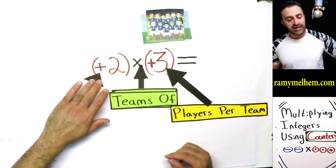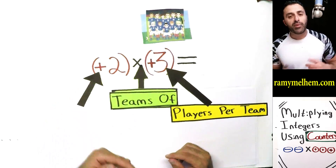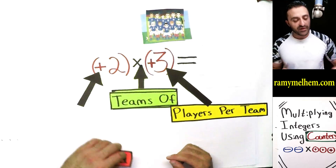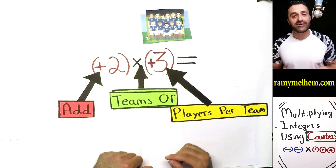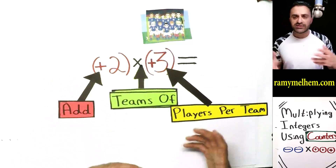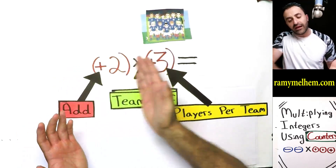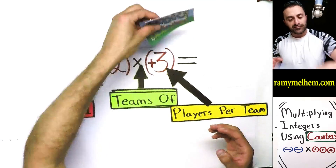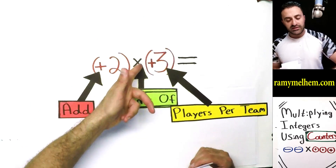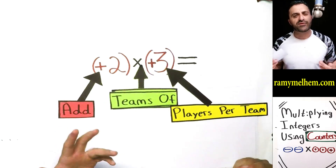That brings us to the positive sign. If that first symbol is a positive, you're going to say 'add.' So if we read it left to right, what does it say? It says: add two teams of positive three. Those are the good guys, so you're going to make two teams with three good guys in each team.